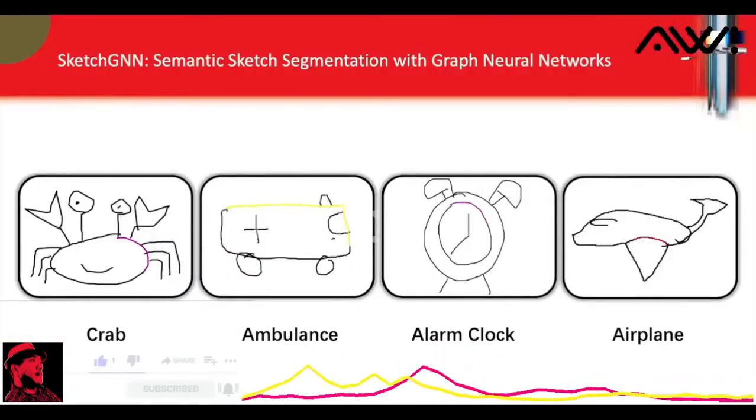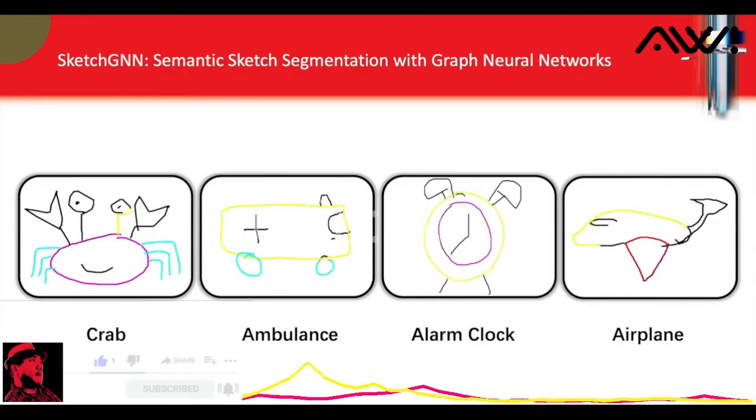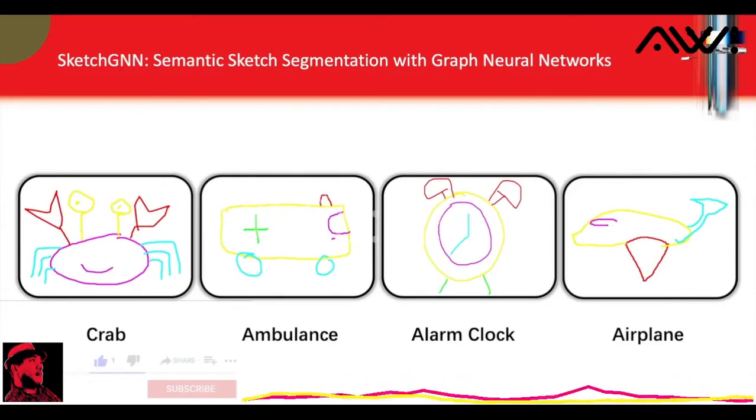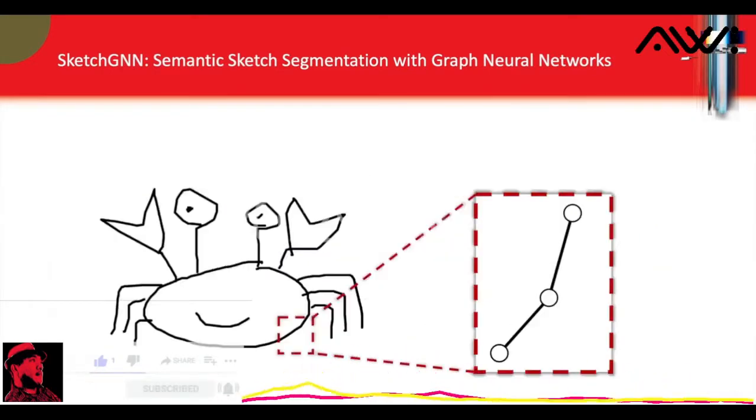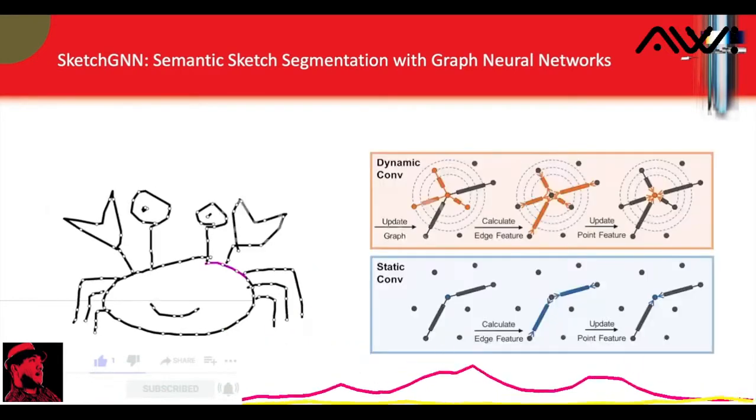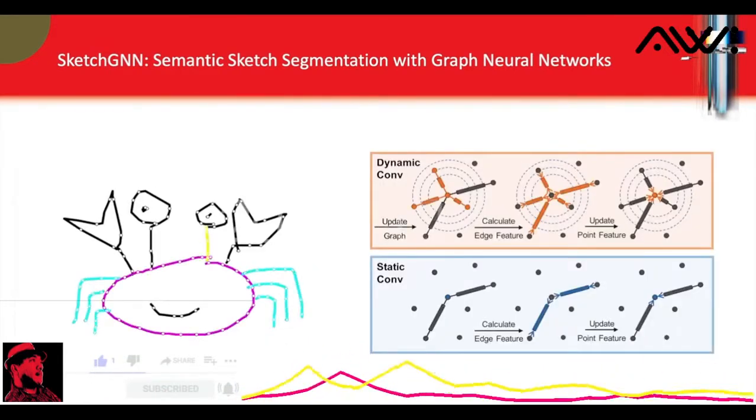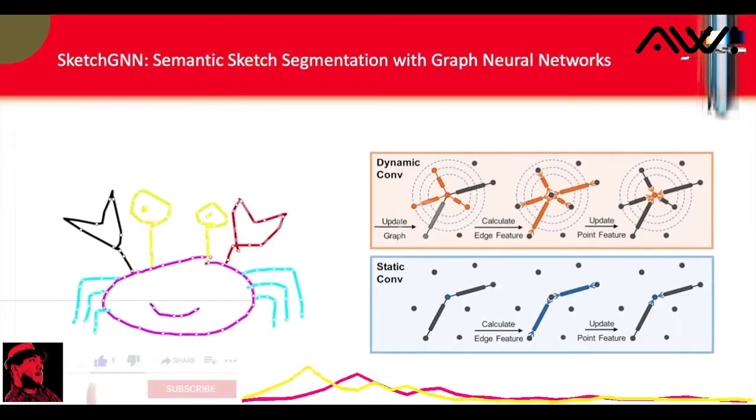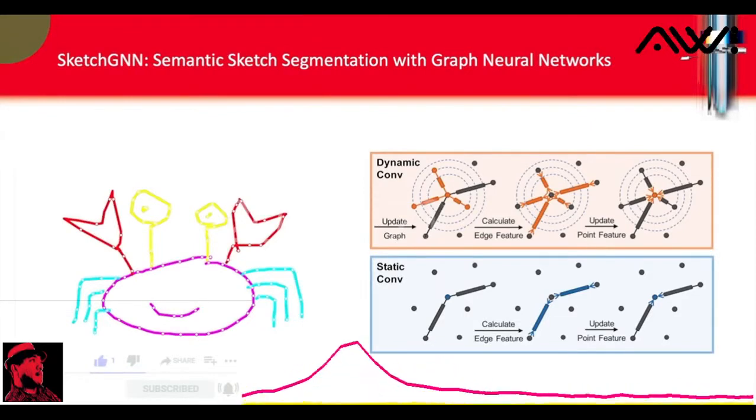We introduce SketchGNN, a convolutional graph neural network for semantic segmentation and labeling of freehand vector sketches. We treat an input stroke-based sketch as a graph with nodes representing the sampled points along input strokes and edges encoding the stroke structure information. To predict the per-node labels, our SketchGNN uses graphical convolution and a static dynamic branching network architecture to extract the features at three levels: point level, stroke level, and sketch level.